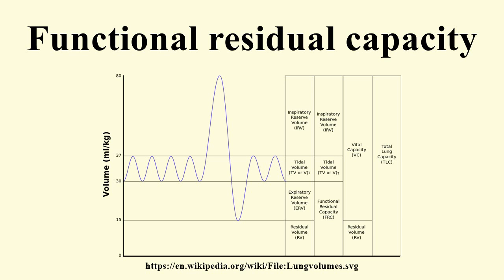The helium dilution technique and pulmonary plethysmography are two common ways of measuring the functional residual capacity of the lungs. The predicted value of FRC was measured for large populations and published in several references. FRC was found to vary by a patient's age, height, and sex. An online calculator exists that will calculate FRC for a patient using these references.